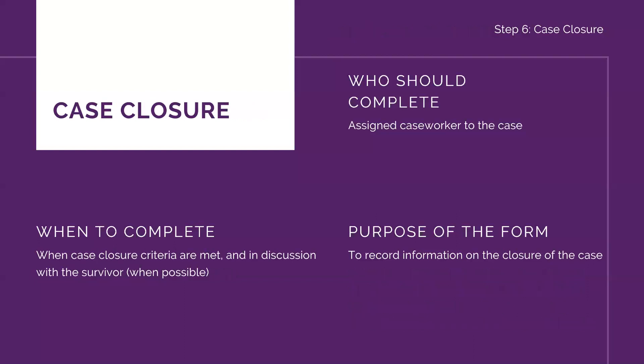The case closure form is completed when the closure criteria are met and in discussion with the survivor when possible. This is done by the caseworker and, depending on the context, may be subject to approval by a supervisor. Case closure documentation helps us have a record of the reasons for closure and to ensure that essential messages are passed on to the survivor.